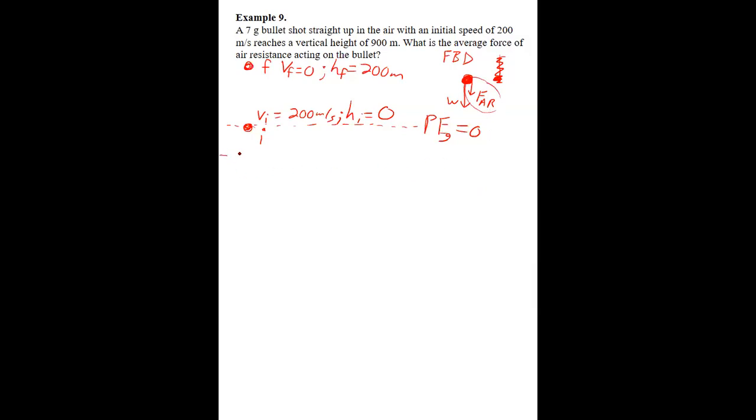And then I'll come down and I'll draw a work diagram for that force. So the force is acting straight down, and then the displacement is upward. Okay, so the bullet is moving upward, but the force of air resistance is downward. And so we say that there's a 180 degree angle between those.